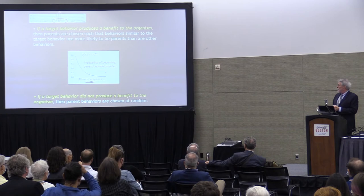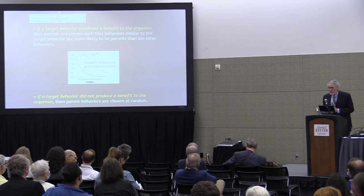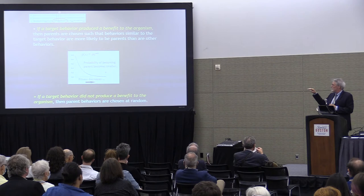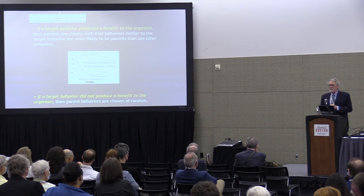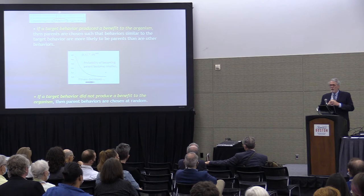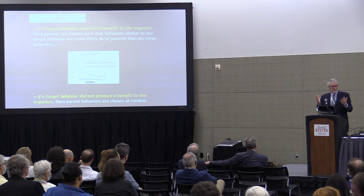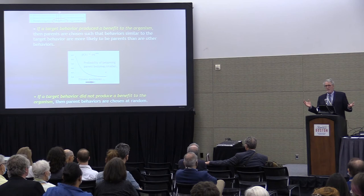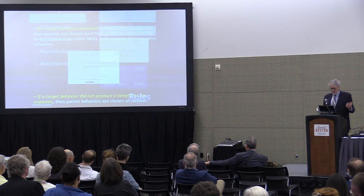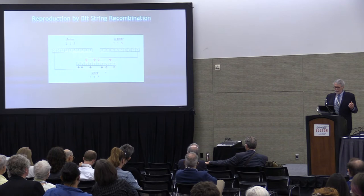The selection rule is important because it implements selection. If a target behavior produces a benefit to the organism, then parents are chosen from the population such that they are similar to the behavior that just produced the benefit. If you have parents similar to that behavior, their offspring will also be similar. You constantly build up the population near and at the target value, so they'll be more likely to be emitted in the future. That's how selection works. But if the target behavior doesn't produce a benefit, then parents are selected at random to produce the next generation.